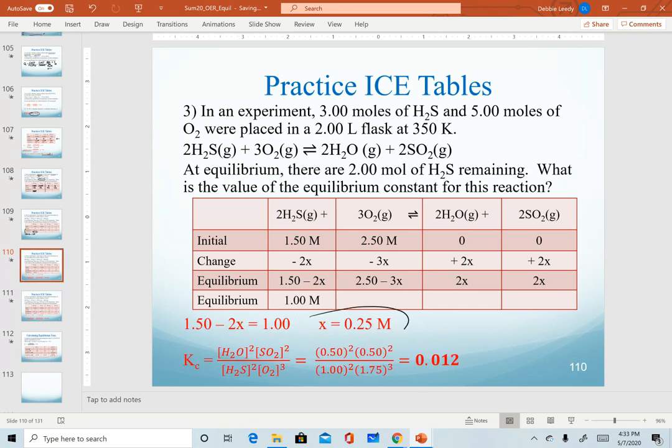When we solve for x, we realize that it is 0.25 molar. That means we can literally plug it into each one of these quantities to get our final values. We still need an equilibrium expression to solve this problem. Now we can plug in our equilibrium values and get our equilibrium constant. This slide shows all of the equilibrium concentrations and our equilibrium constant.